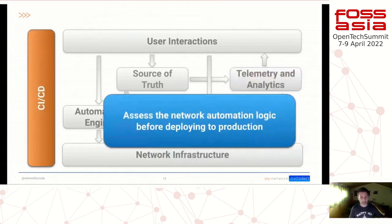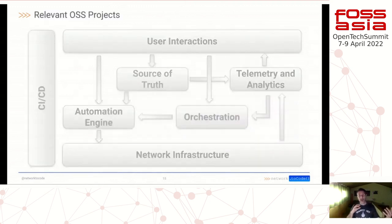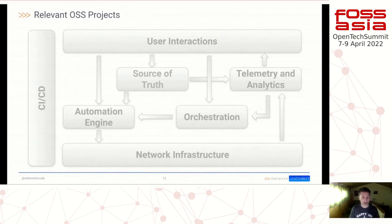CI/CD helps us deploy network automation logic while taking care of not breaking production. The same practices we apply to the software development lifecycle, we apply to network automation, taking into account the specificities of network devices. Now we'll do an overview — not exhaustive — of the relevant open source projects in the different areas. This only covers open source projects; we always work in brownfield environments where there are vendor solutions we integrate, but today we mention only relevant open source ones.